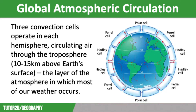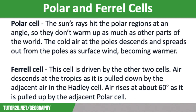As a result, this is where you will find many of the world's deserts. Air rises again at 60 degrees and descends at 90 degrees. The smallest and weakest cells are the polar cells. These extend from between 60 and 70 degrees north and south to the poles. The sun's rays hit the polar regions at an angle, meaning they receive less concentrated solar radiation and don't warm up as much as other parts of the world. The cold air at the poles descends, meaning there is no condensation and rain. This cold air spreads out from the poles as surface wind, becoming warmer, and at around 60 degrees this warm air rises, leading to clouds and rain. This air will then flow back to the poles.